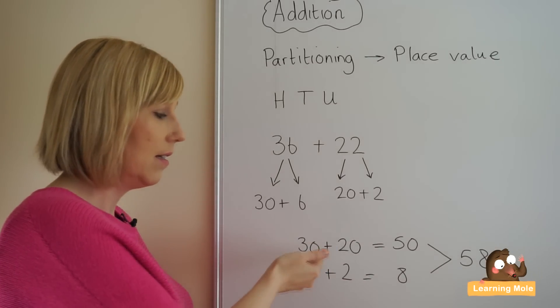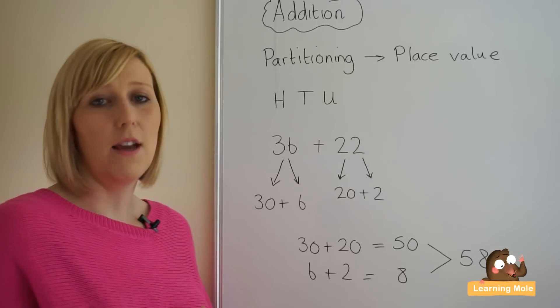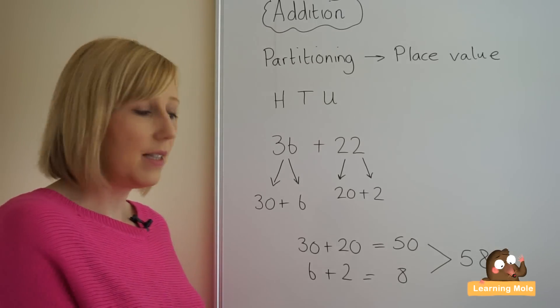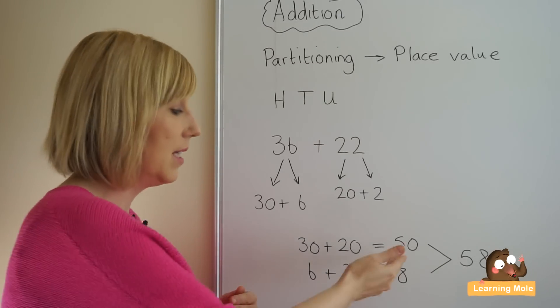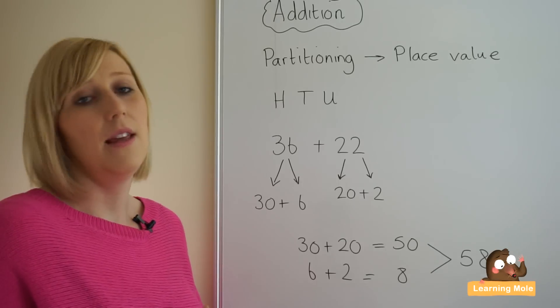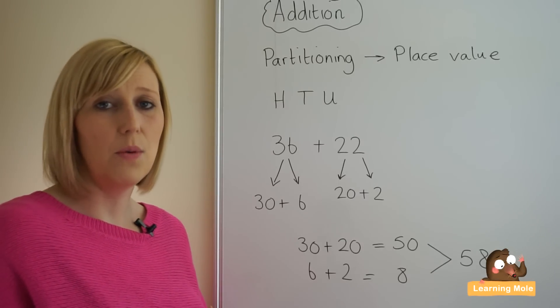They already know those number facts. They can do the three and the two, they know it makes five to get 50. And then they've got their units: 6 plus 2, which is 8. And then recombining those numbers together to get 58.